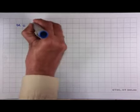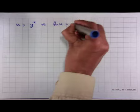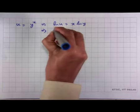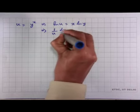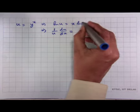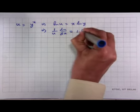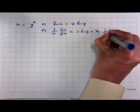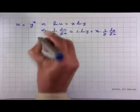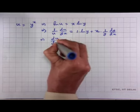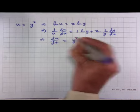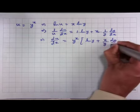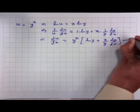Since u = y to the x, we have ln(u) = x ln(y). Differentiating with respect to x: 1/u times du/dx = ln(y) plus x times (1/y) dy/dx. Therefore du/dx = y to the x times [ln(y) + (x/y) dy/dx]. Call this equation 2.